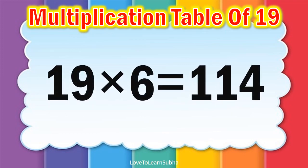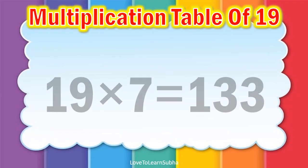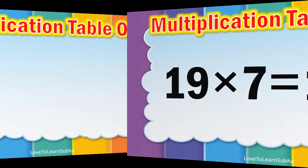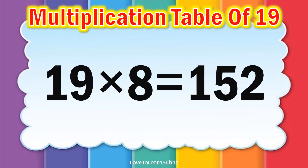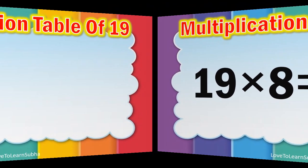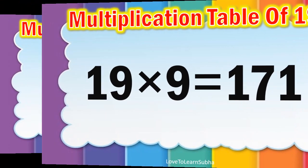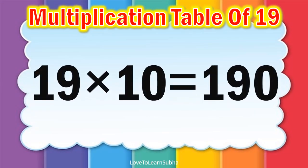Nineteen sixes are hundred and fourteen. Nineteen sevens are hundred and thirty-three. Nineteen eights are hundred and fifty-two. Nineteen nines are hundred and seventy-one. Nineteen tens are hundred and ninety.